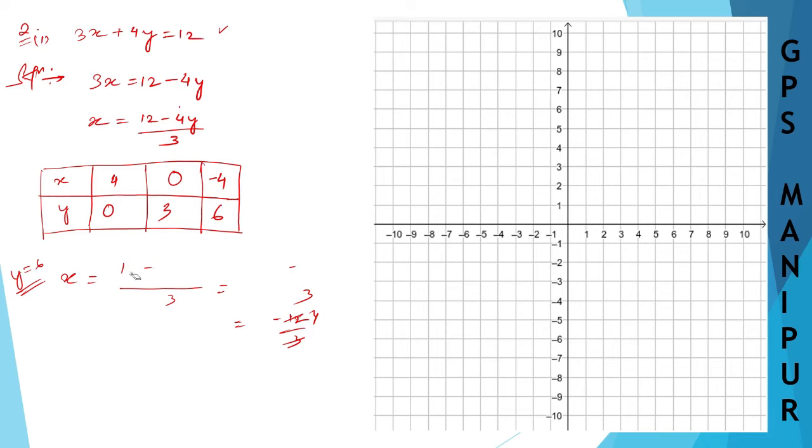Now you draw the graph. X is 4, y is 0. Here this is x, this is x, this is y, and this is y.